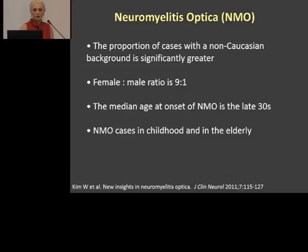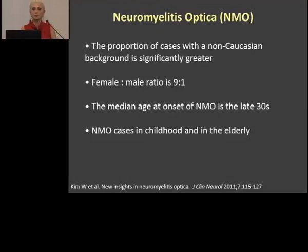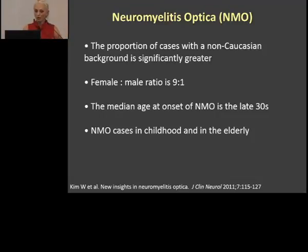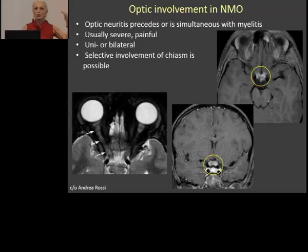So where do you expect neuromyelitis optica? There are certain characteristics. The proportion of cases with non-Caucasian background is significantly higher — especially the Asian population has a higher frequency of NMO than the white population. It is predominantly female, with a female-to-male ratio of 9 to 1. The disease usually starts around age 30, but cases have been described in childhood and the elderly. We will go from optic nerve involvement, then spine, then brain, and then some interesting cases.